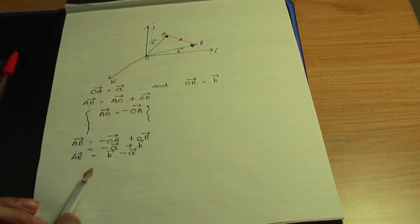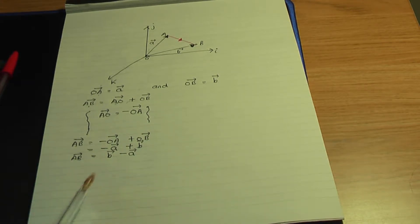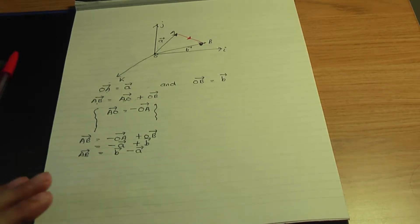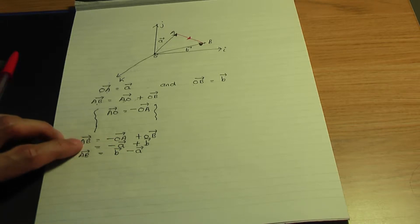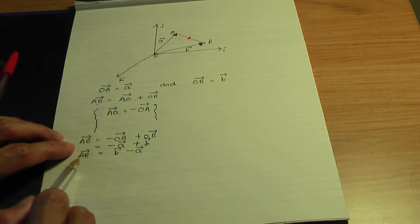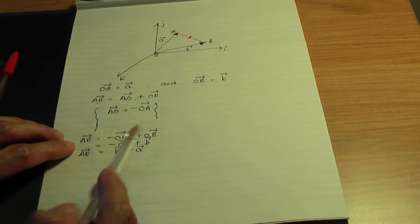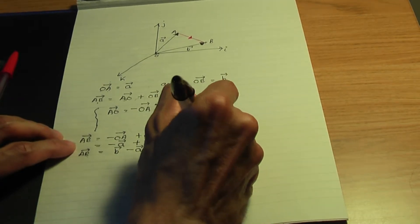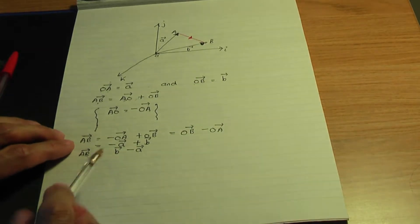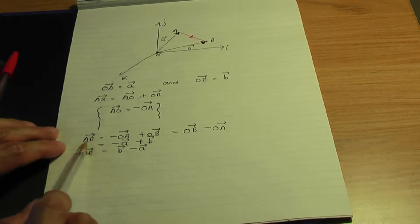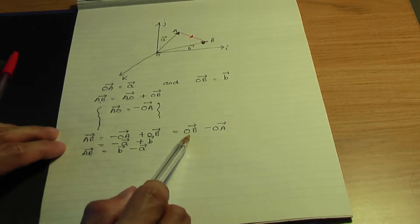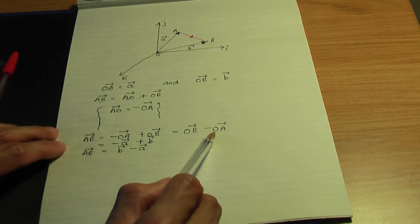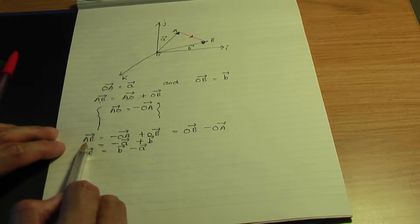So the vector AB will be the vector b minus the vector a. To work out the vector AB quickly, it's always O of the second letter minus O of the first letter. So if you look at this equation, it's minus OA plus OB, which I could rewrite as vector OB minus vector OA.